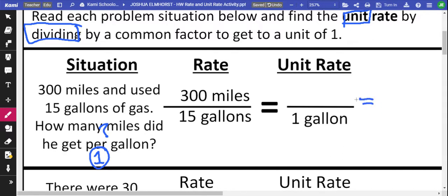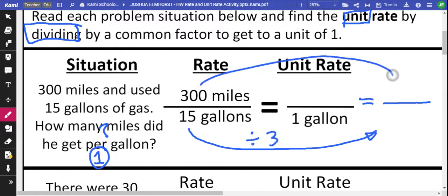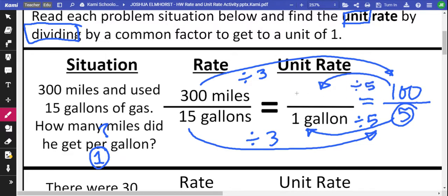So first, looking at 15 down to 1, if you're not sure how many times 15 goes into 300, make a smaller fraction by dividing by a number that you do recognize. For example, 300 divided by 3 is 100. 15 divided by 3 is 5. So now that you have 5, go back and compare it to 1. 5 divided by 5 is 1, and then 100 divided by 5 would be 20. 20 miles per gallon.